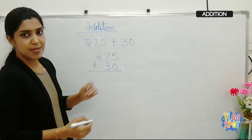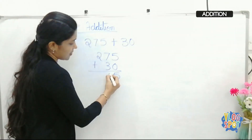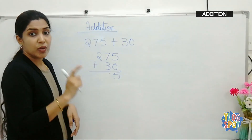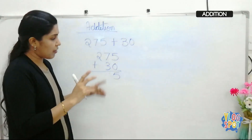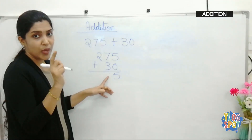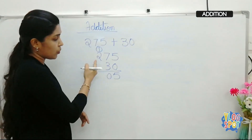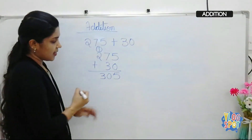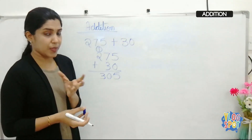So 5 plus 0 is 5. Then 7 plus 3 is 10 — but don't write both digits here. We keep only one digit in that place: write 0, and carry over the 1 to the next place. Then 2 plus 1 is 3. The result is 305.